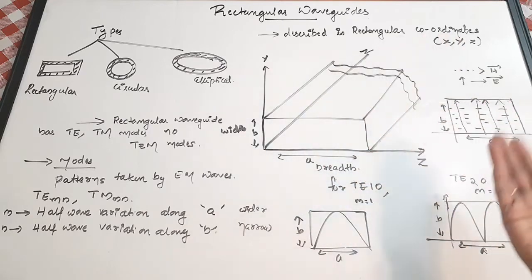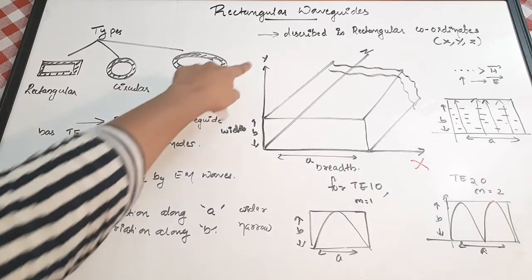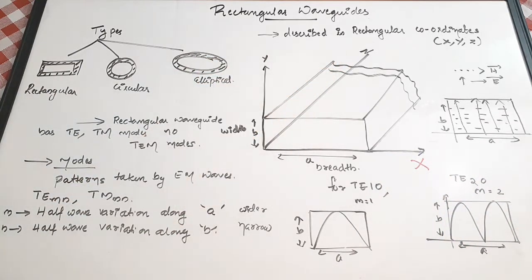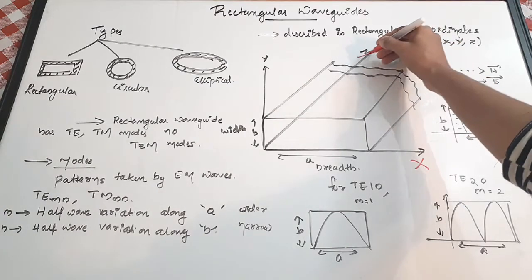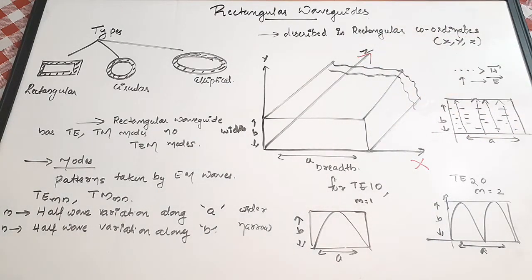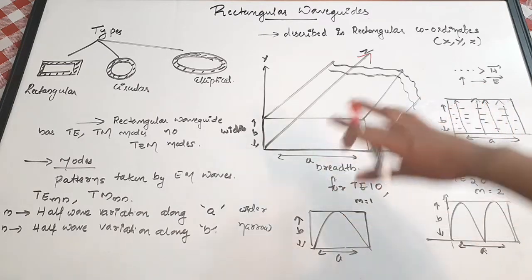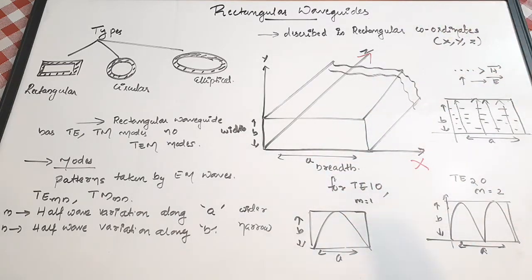The waveguide is defined in a rectangular coordinate system with x, y, and z axes. Throughout this video we are going to assume that the direction of propagation is in the z direction. The wave is propagating in the z direction, so we write the field equations in terms of z — E(z) and H(z). There will also be equations for the x and y directions, but the direction of propagation is z.